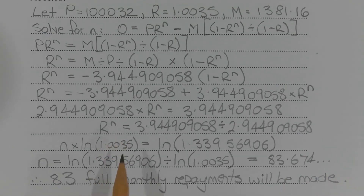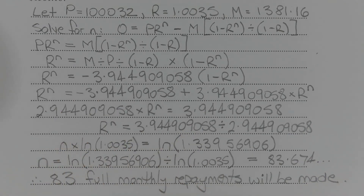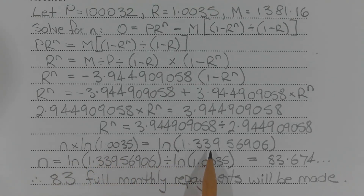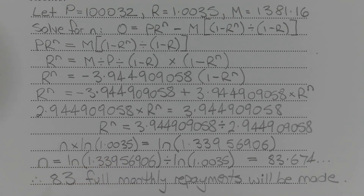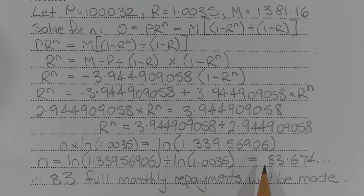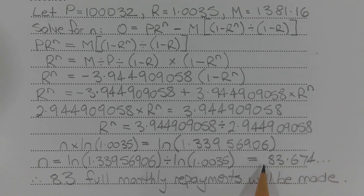Dividing both sides by the coefficient of R to the power of N, R to the power of N equals 3.944909058 divided by 2.944909058. To make N the subject, we take the logarithm of both sides. Using LN, N times LN of 1.0035 equals LN of 1.33956906. Dividing both sides by LN of 1.0035, N equals LN of 1.33956906 divided by LN of 1.0035, which equals 83.674. Therefore 83 full monthly payments will be made — it is important that this is rounded down.